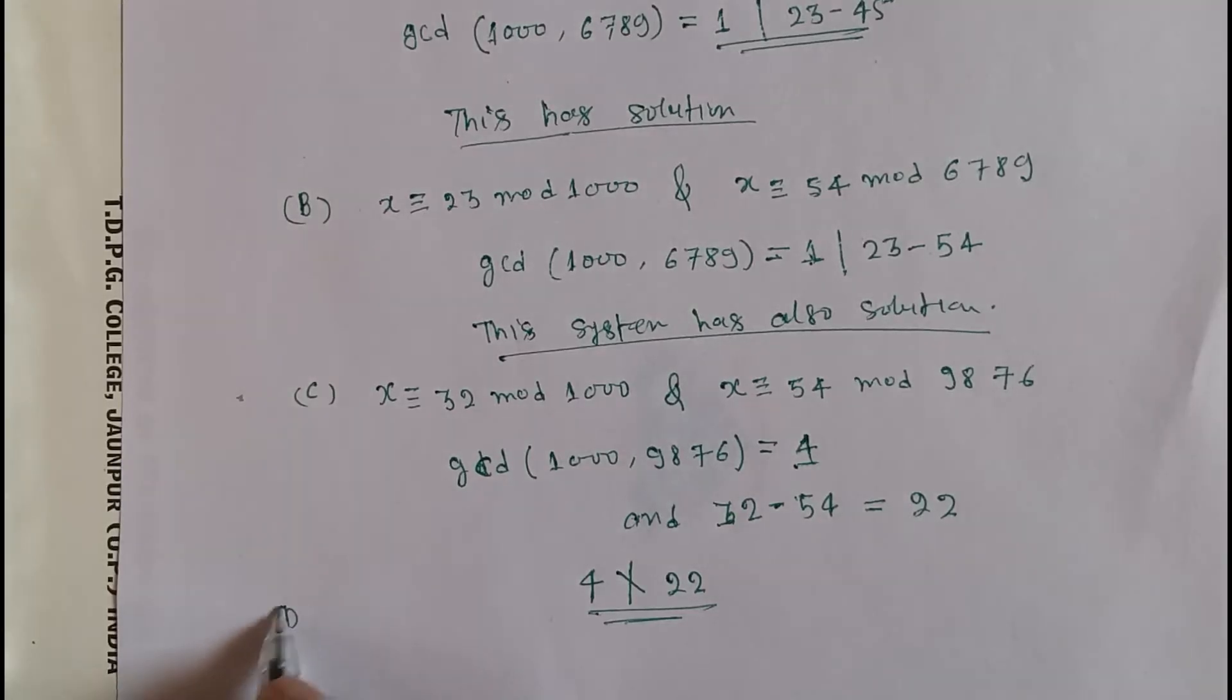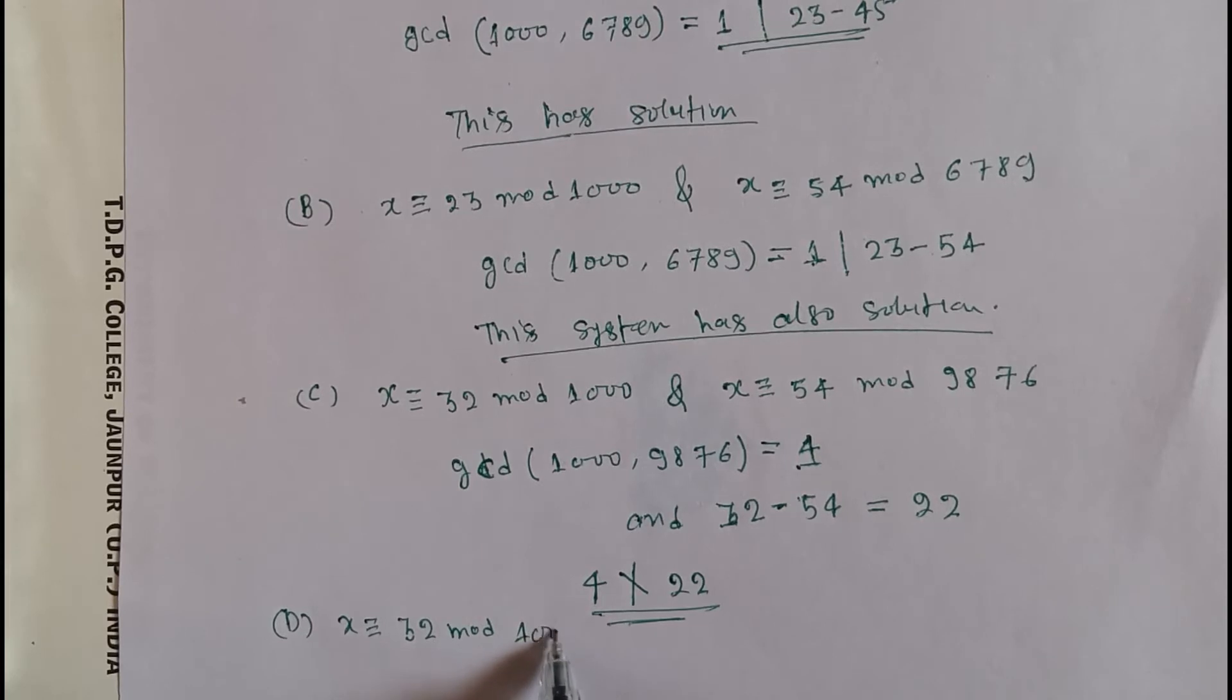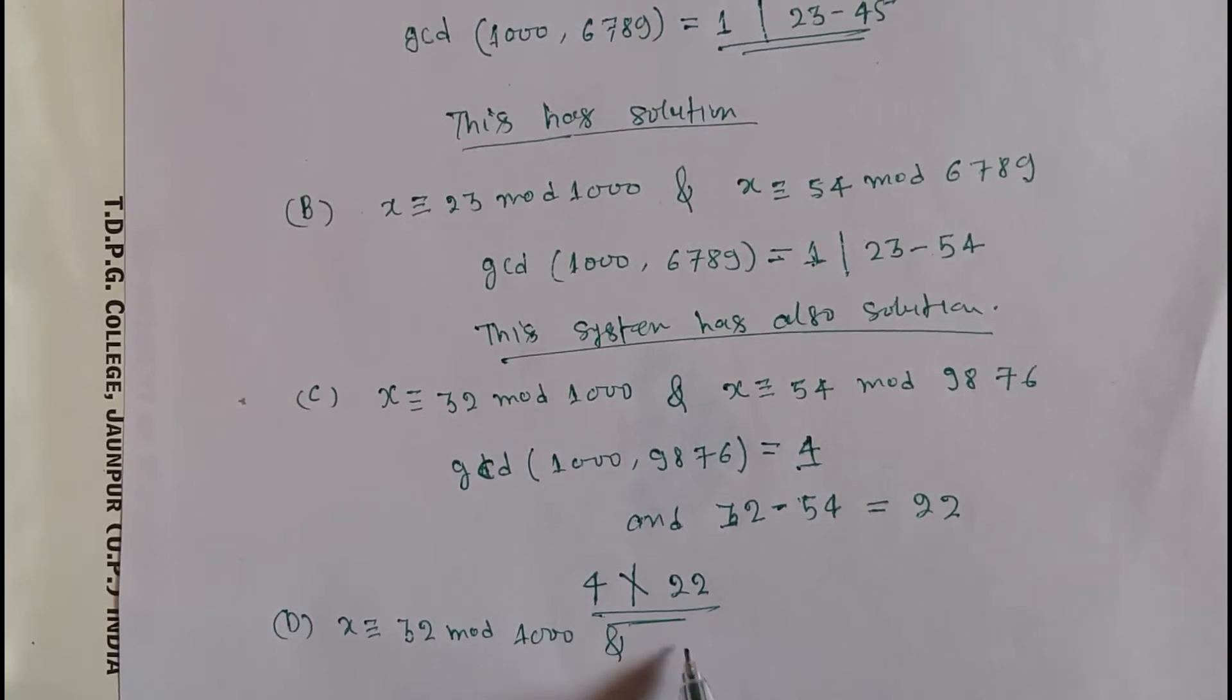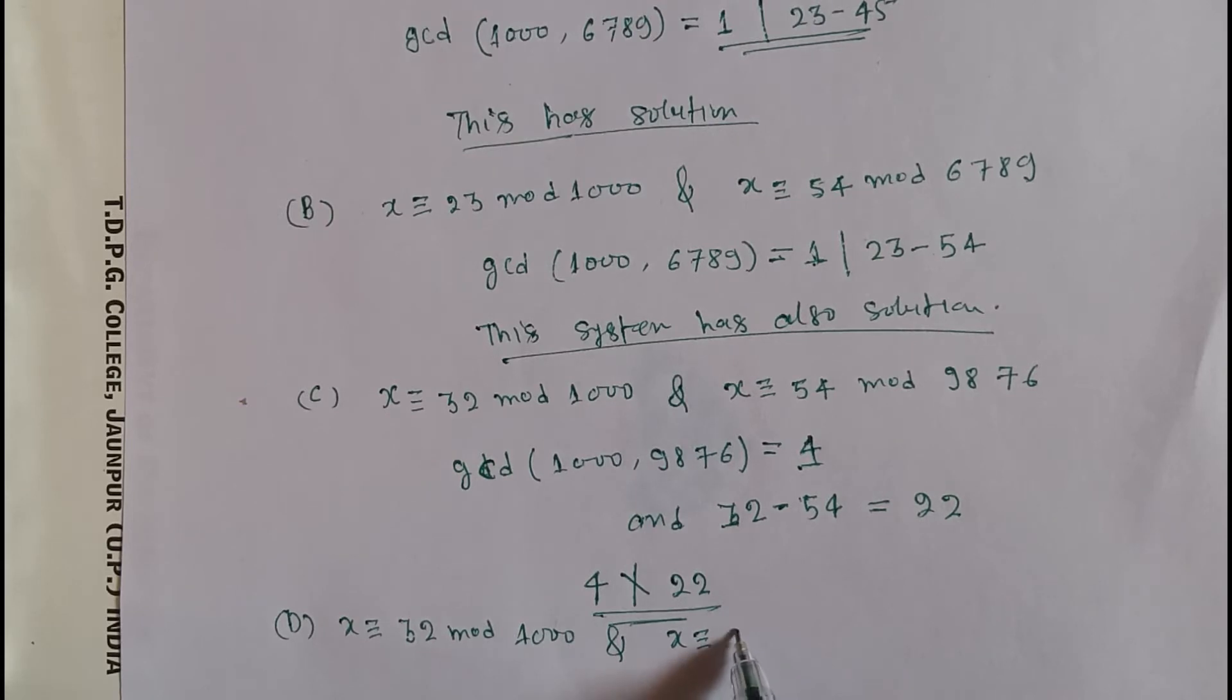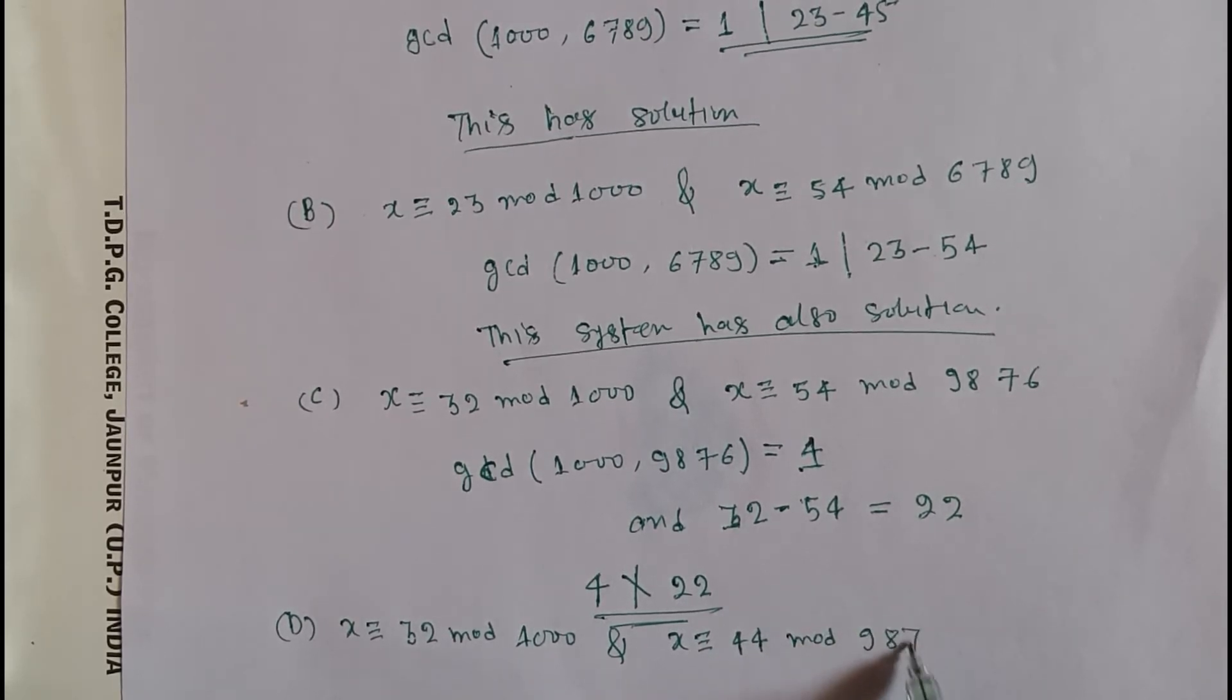Option D: x congruent to 32 mod 1000 and x congruent to 44 mod 9876.